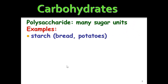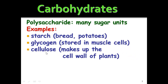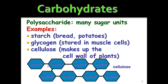The third type is polysaccharide, meaning many sugar units. Examples are starch — bread, potatoes, rice, things like that — glycogen, which is stored in our muscle cells (we'll talk more about glycogen when we discuss cellular respiration), and cellulose, which makes up the cell wall of plants. When you have many sugar units connected together, this is a polymer, or technically a polysaccharide.